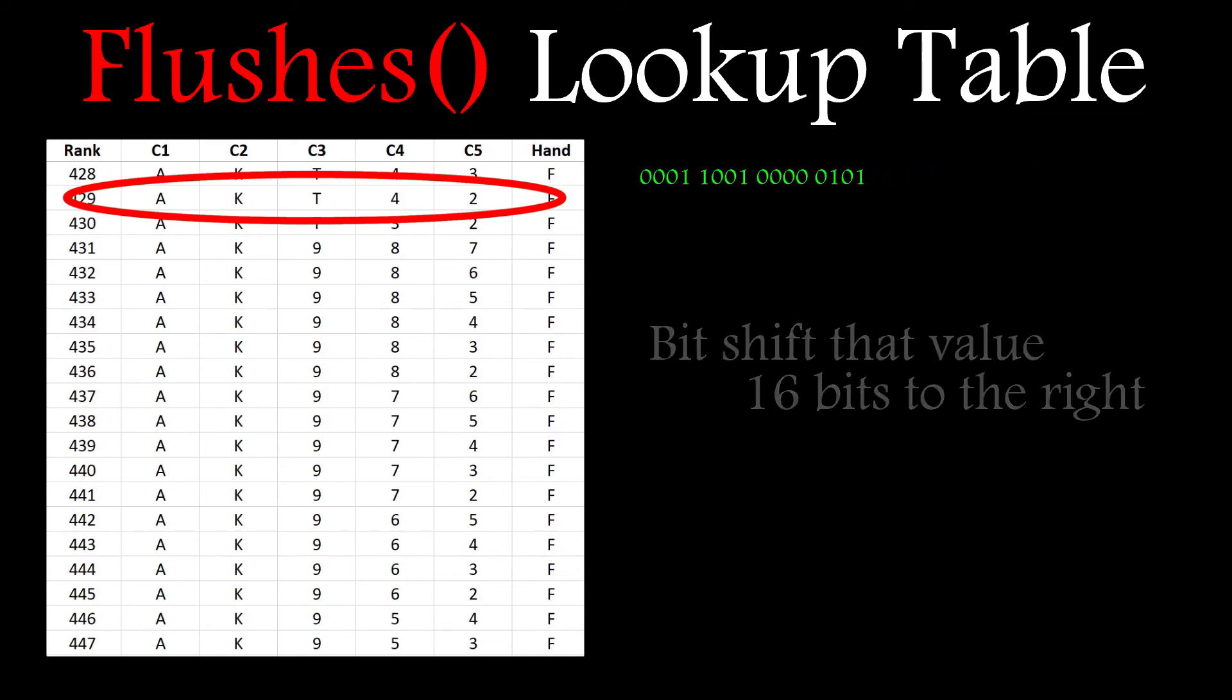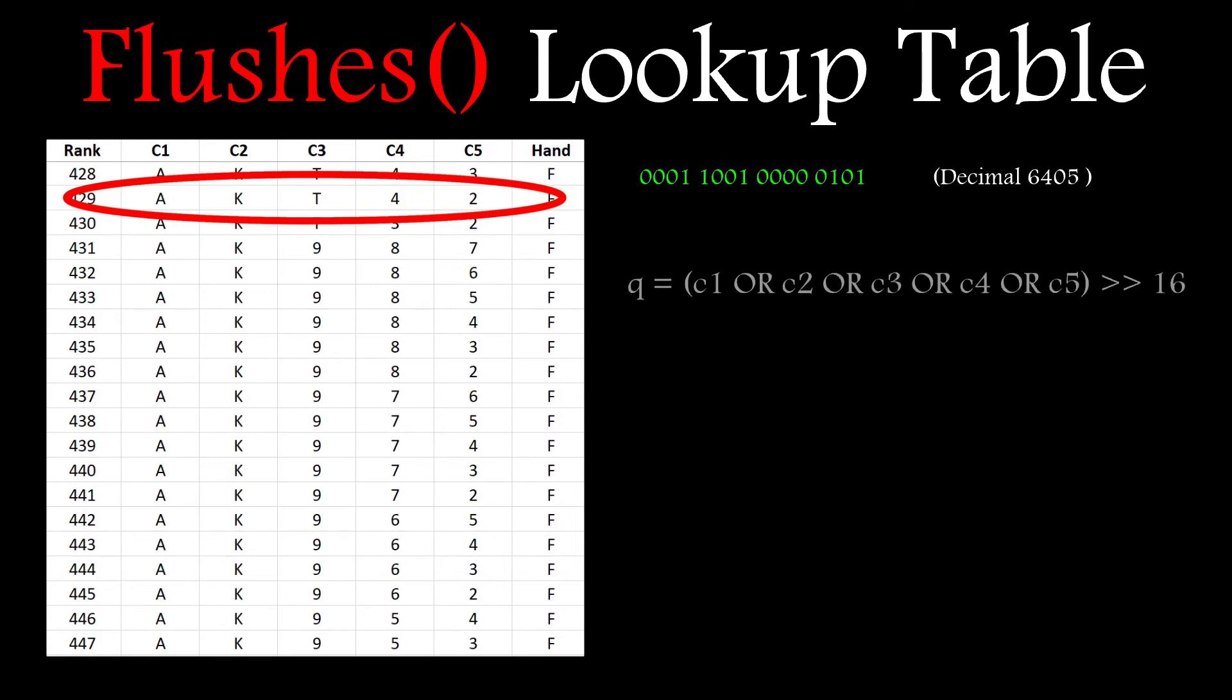In this case it's 6405. That might sound complicated but it's really just one line of code, and remember all of my encoded card numbers are just big integers. I'm only showing the binary bits data here so you can see what's going on.